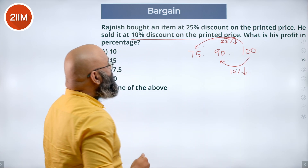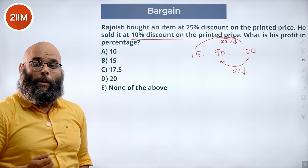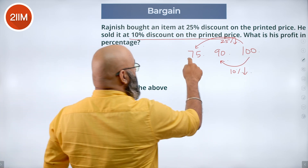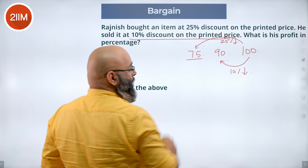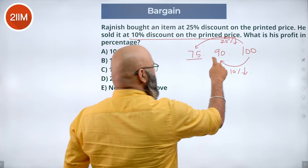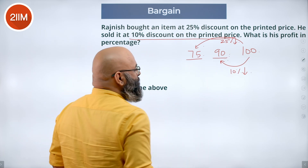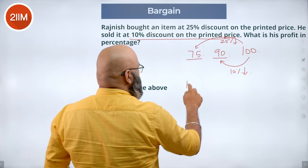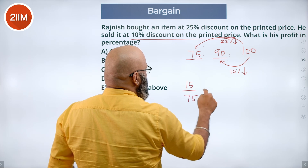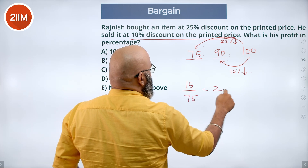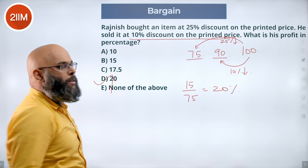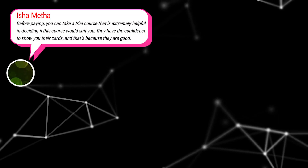So what is his profit percentage? He bought it at 75 and sells it at 90. The profit is 15. That is 15 out of 75, which gives us a 20% profit.